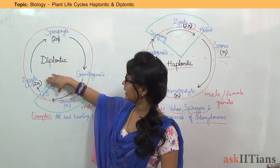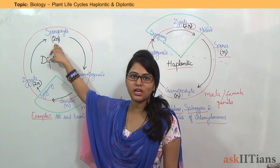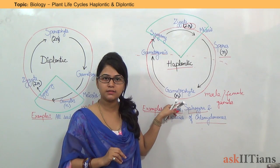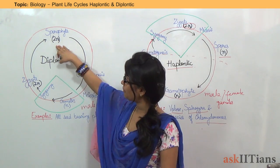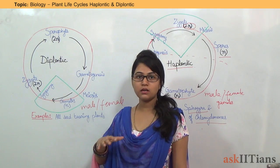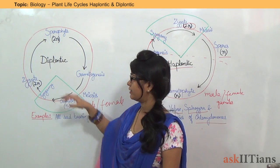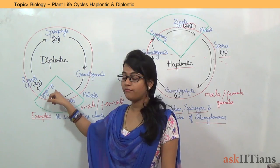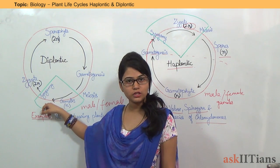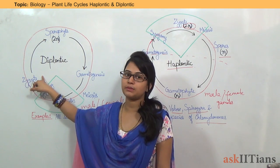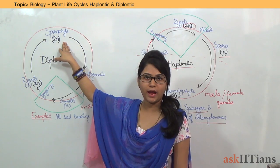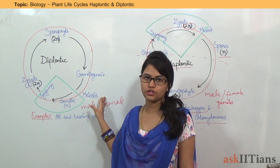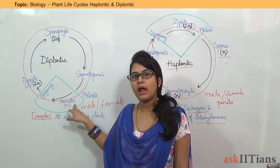The only difference is the dominant photosynthetic phase has been changed to diploid. Under the haploidic life cycle, the dominant photosynthetic phase was haploid, but under the diploidic life cycle, the major dominant photosynthetic phase is diploid. Starting again: with gametogenesis, male and female gametes are formed. They fuse together through syngamy to produce a diploid zygote. This zygote produces sporophytes, which are also diploid. These diploid sporophytes through gametogenesis produce gametes, which are haploid in nature.